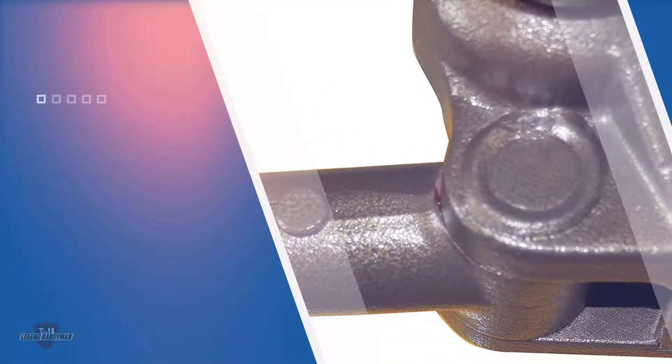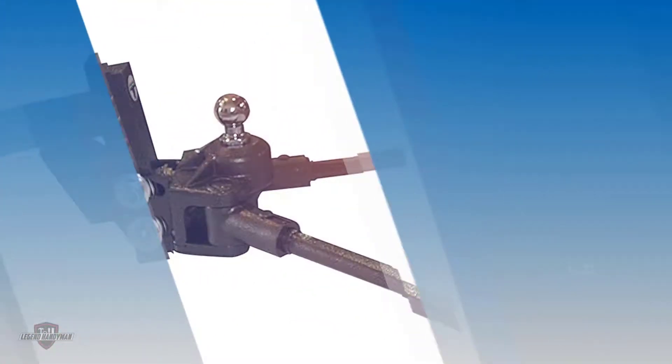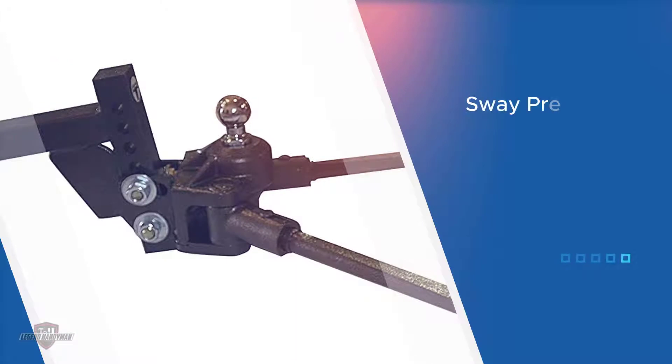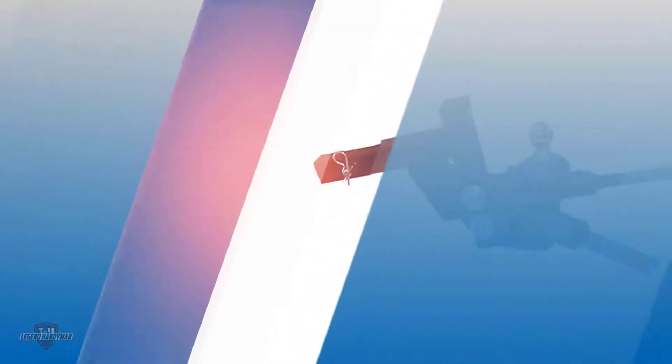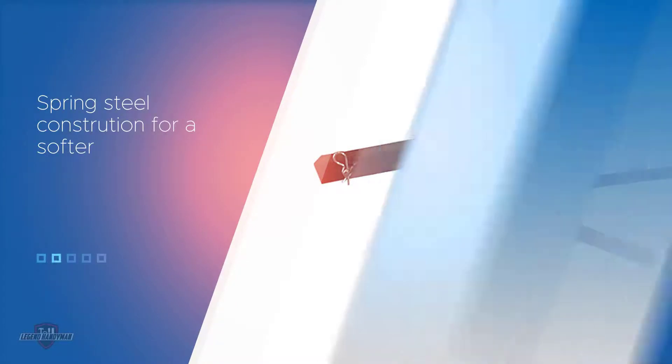The Blue Ox BXW 1000 SWAYPRO is our pick for the best overall weight distribution hitch because it comes with a pre-adjusted hitch head that doesn't require any further fine-tuning once it's installed. That's not always the case with these hitches, and it makes this a great choice if you don't have a ton of experience using them. This trunnion style hitch has excellent sway control.